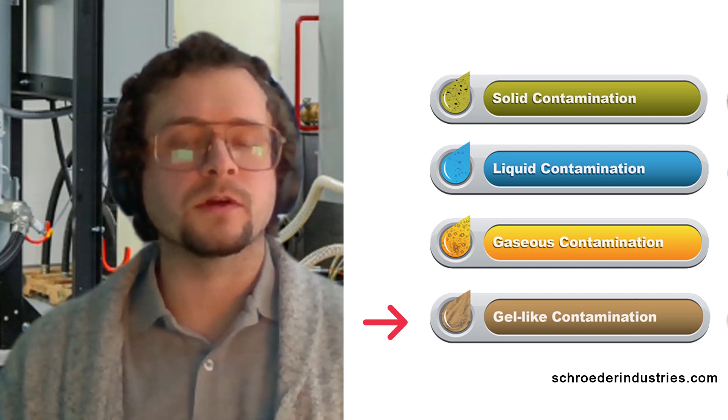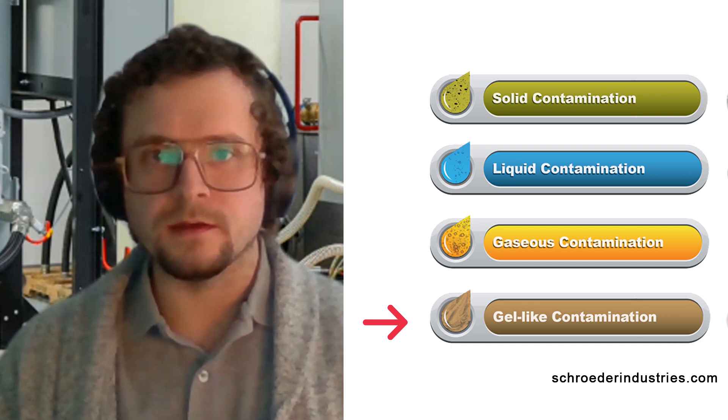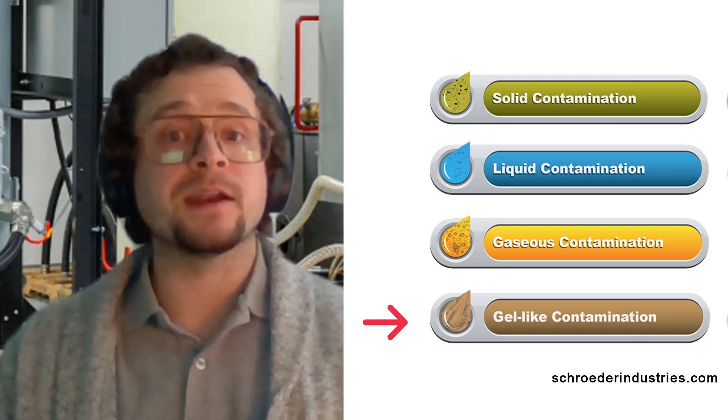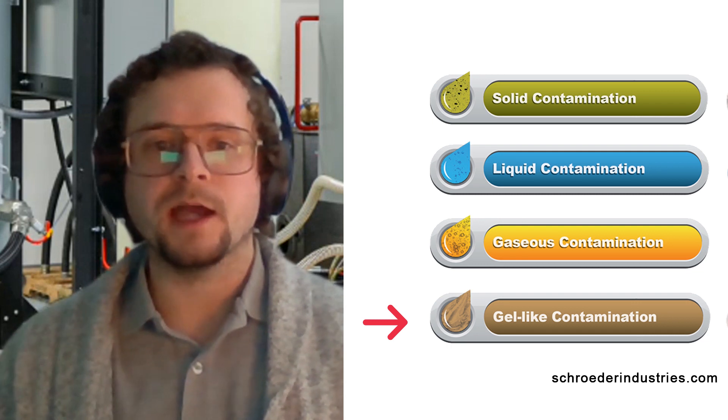And finally, an example for varnish or oil degradation byproducts: varnish can be a root cause of further accelerated fluid aging, as well as increased particle generation through changing inadequate lubrication properties, as well as the formation of water from chemical reactions.